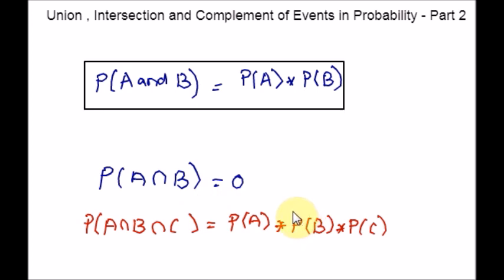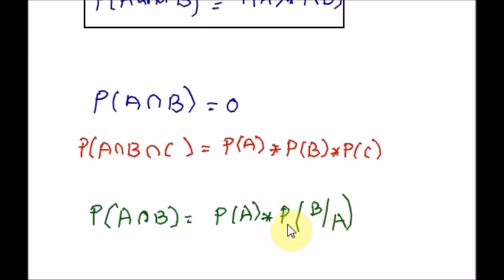What do we do when the events A and B are not independent? If such cases occur, the concept of conditional probability will apply. We can discuss conditional probability in a separate video. When we have two events A and B, where the occurrence of A affects the occurrence of event B, in such cases the probability of intersection of the two events uses conditional probability. The probability of B given A is the probability of event B given that event A has already taken place.